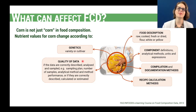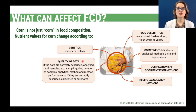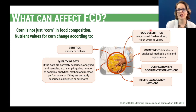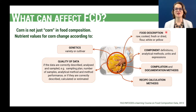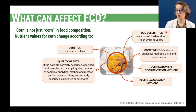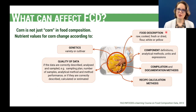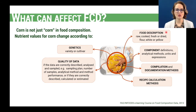Food composition data users should be able to evaluate the quality of the data presented in a food composition table. Another important topic is the food description. If I'm looking for data of corn, just the name is not enough — I need to know if I want the composition of raw or cooked corn, if it should be fresh or dried or flour, and the color, if it's white or yellow. Depending on all these details, the composition will change. This is why the more complete the food description is, the better.